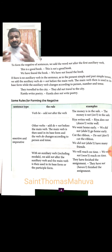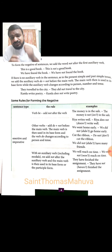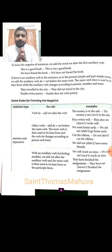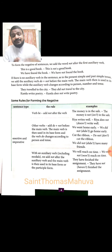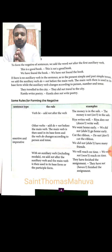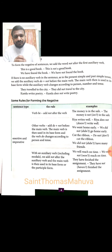Another example: 'Kamala writes poetry' — since Kamala is third person singular, we use 'does,' so it becomes 'Kamala does not write poetry.' There are a few rules for forming negatives. If the forms of 'be' are present in the sentence, just add 'not' after that verb. For example, 'The money is in the safe' becomes 'The money is not in the safe.'